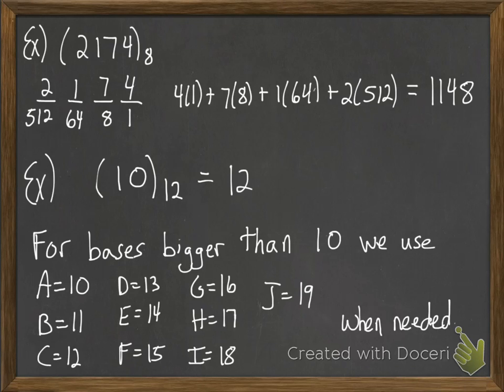And so here they are. For bases bigger than 10, we're going to use those letters A through J to represent the numbers 10 through 19 when they're needed. And what I mean by when they're needed: in the case of a base 12 system, you're going to need symbols for 10 and 11. So C would not be defined in a base 12 system because to write 12 you'd write 1, 0.